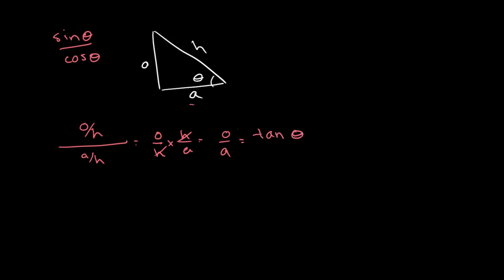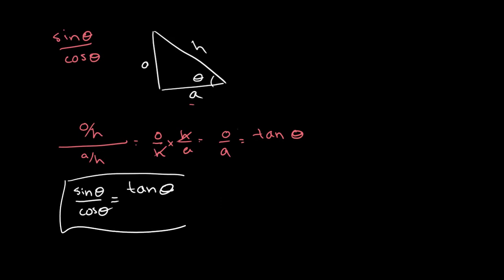Therefore, sine of theta over cosine of theta is equal to tan of theta. This usually works out really nicely when we have to do more complicated equations involving sine and cosine.